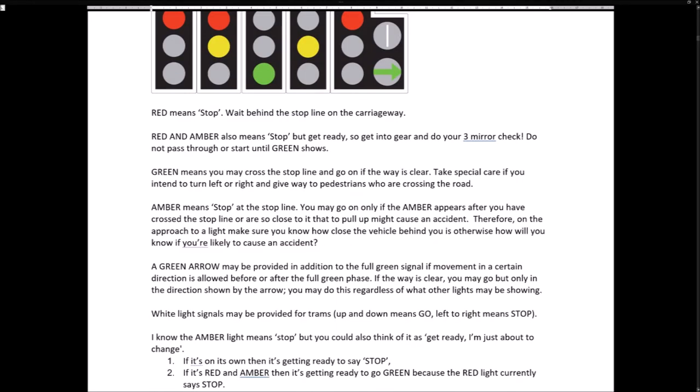Red means stop — wait behind the stop line on the carriageway. Red and amber also mean stop, but get ready: get into gear and do your three-mirror check. Do not pass through or start until green shows. Amber means stop at the stop line. You may go on only if the amber appears after you have crossed the stop line or are so close to it that to pull up might cause an accident. Therefore, on the approach to a light, make sure you know how close the vehicle behind you is — otherwise, how will you know if you are likely to cause an accident?